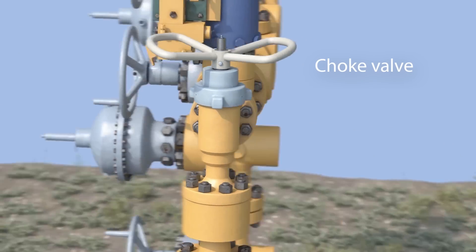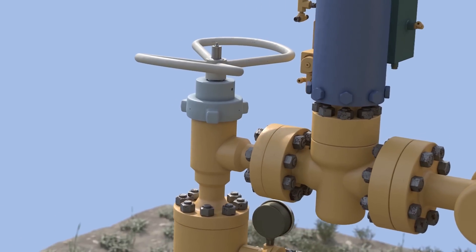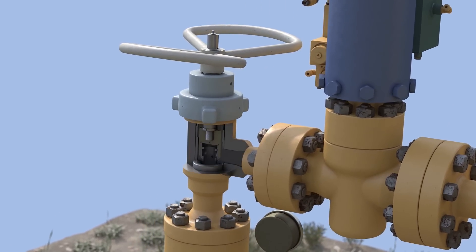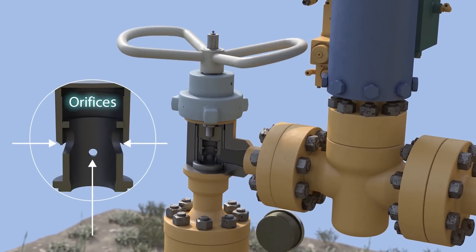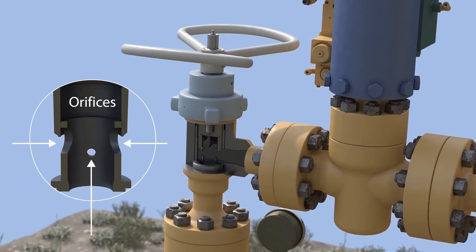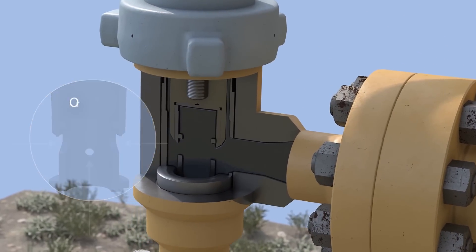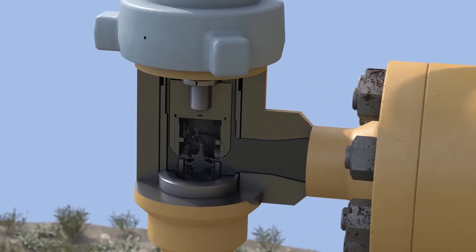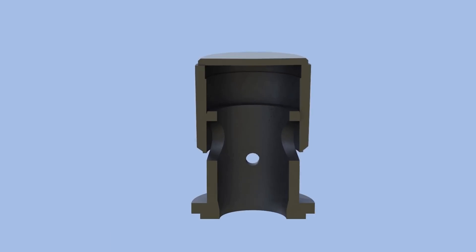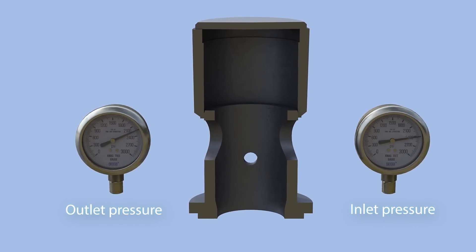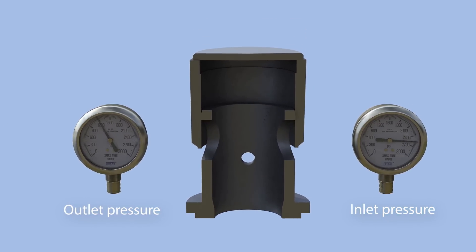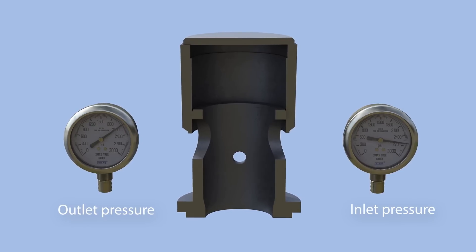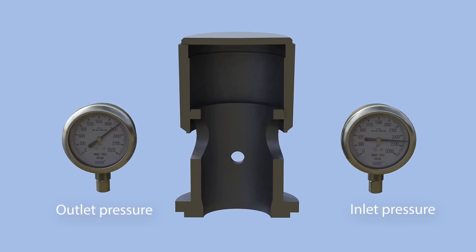The choke valve is designed to take the brunt of the pressure off of the line components, increasing their life and yielding significant benefits. By restricting the flow to a very small opening or orifice, choke valves reduce well pressure and control production rate, creating downstream or back pressure.